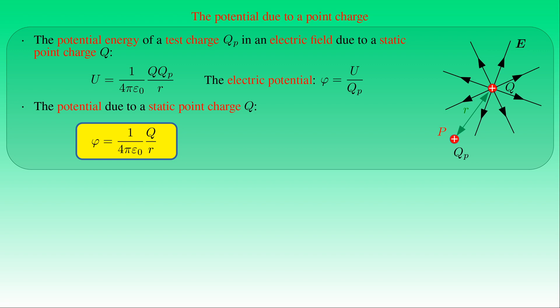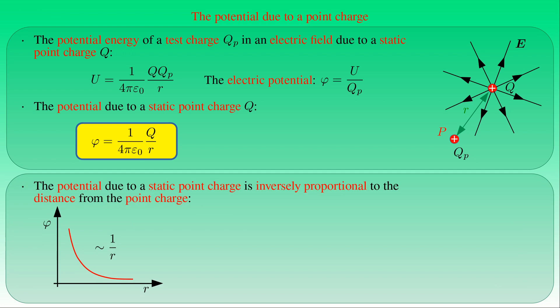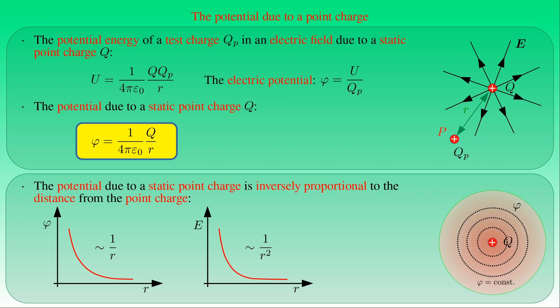This formula shows that the potential due to a static point charge is directly proportional to the charge and inversely proportional to distance R, while the magnitude of E is inversely proportional to R². As a result, E drops off faster than the potential as we approach infinity. Because of spherical symmetry, the potential is constant over spheres centered at the point charge — these spheres are called equipotential surfaces of the electric field.